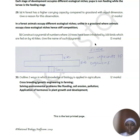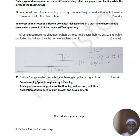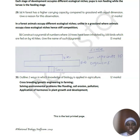Construct a pyramid of numbers where 10 trees are inhabited by 100 birds, which are fed on by 40 kites — this will be an inverted pyramid, because the trees are fewer than the organisms that feed on them. Two ways in which knowledge of biology is applied in agriculture include selective breeding, solving environmental problems, and application of hormones in plant growth. Thank you guys for watching — please like, subscribe, and comment. Bye.